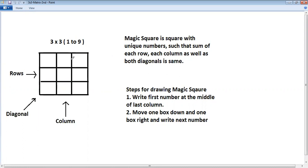As with the rule here it says you have to fill the numbers here. There are 9 boxes total here so you have to fill numbers from 1 to 9. Each box should have unique numbers. That number should be filled such that total of each row, each column as well as both diagonals should be same.